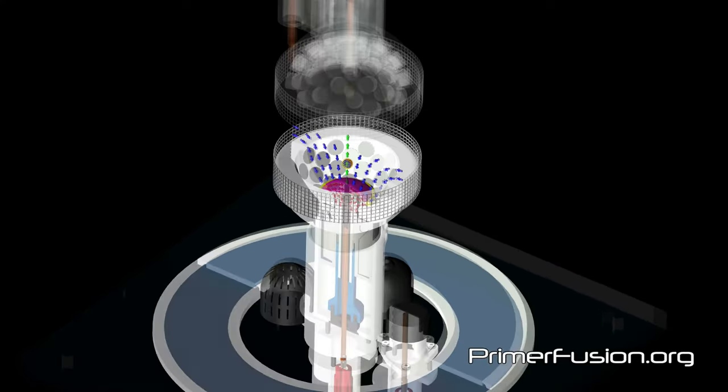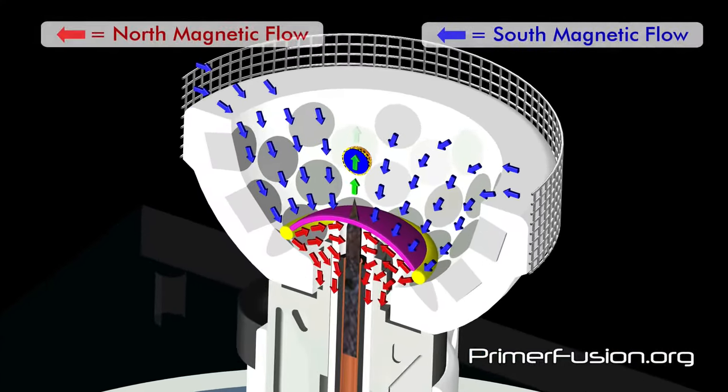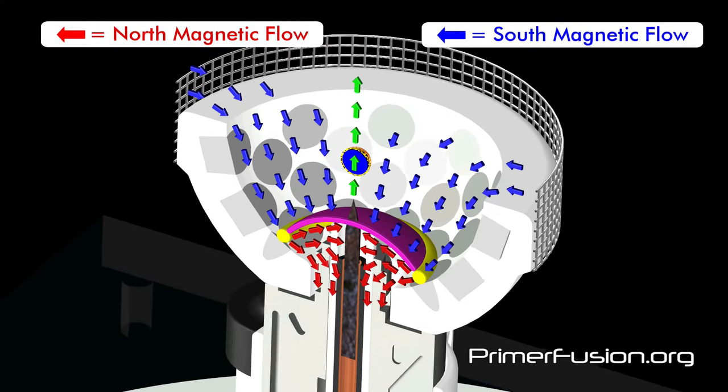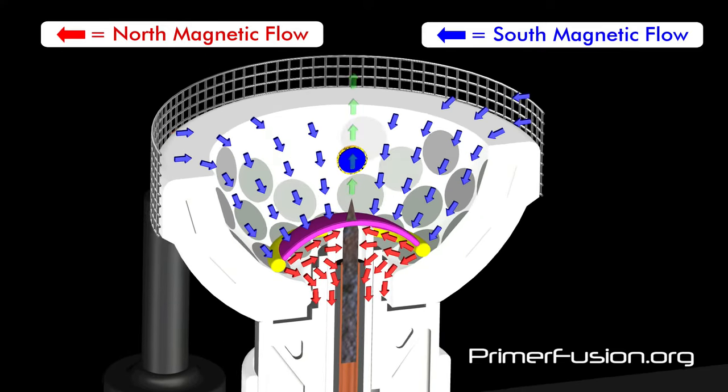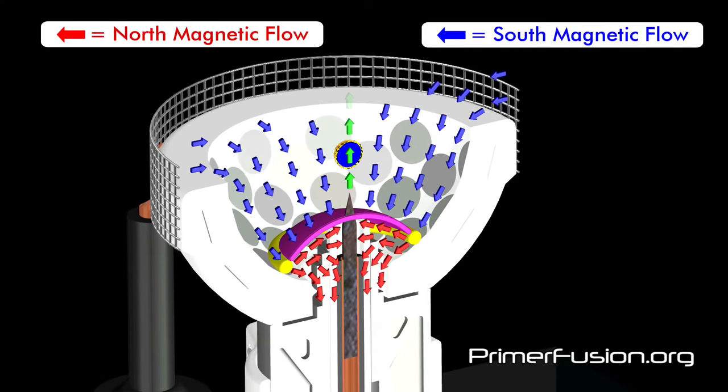In this cutaway view of the Primerfusion reactor, the magnetic field vectors are shown using red arrows to indicate a north magnetic orientation and particle flow, and blue arrows to indicate a south magnetic orientation and particle flow.